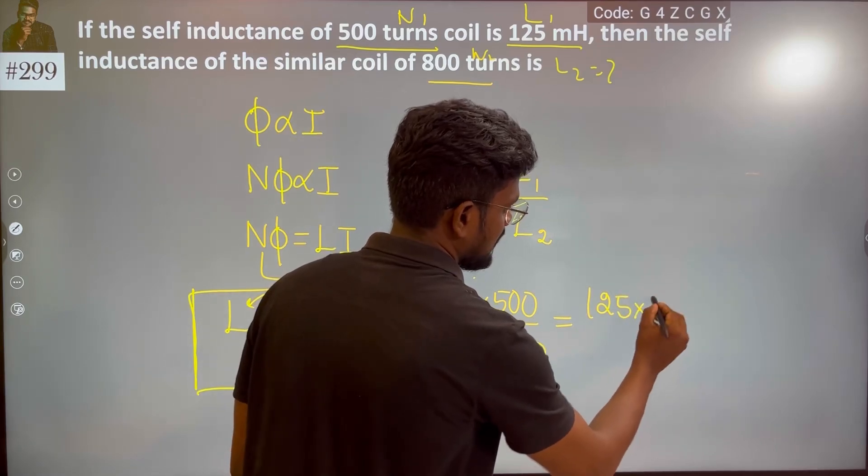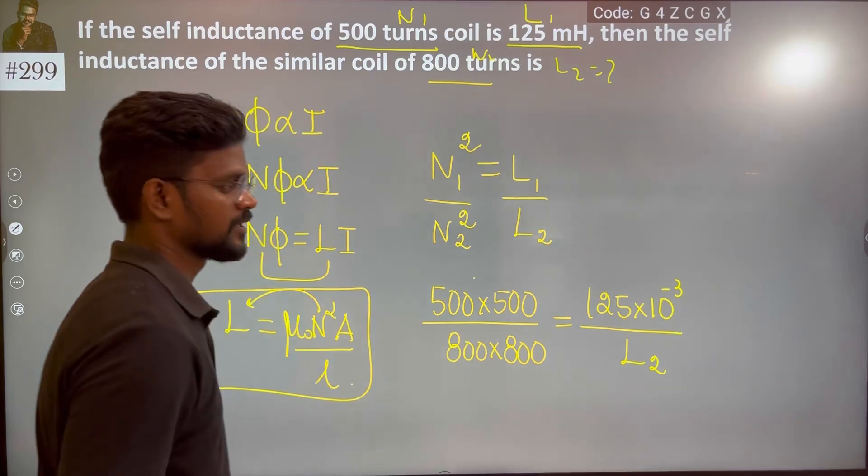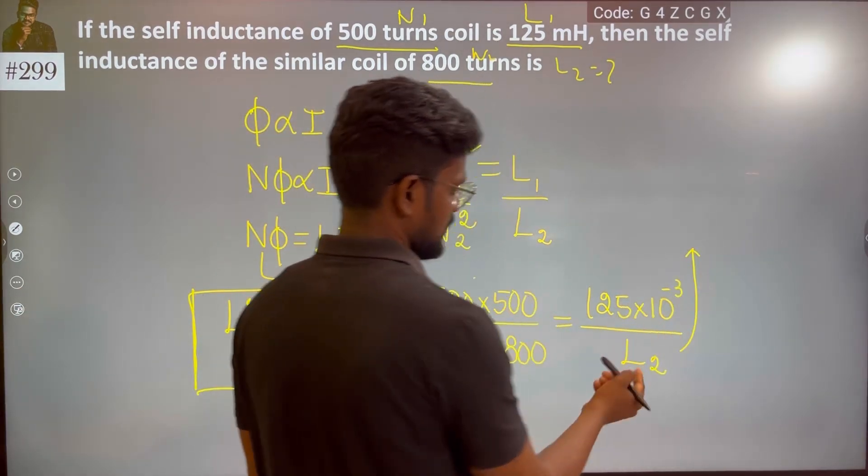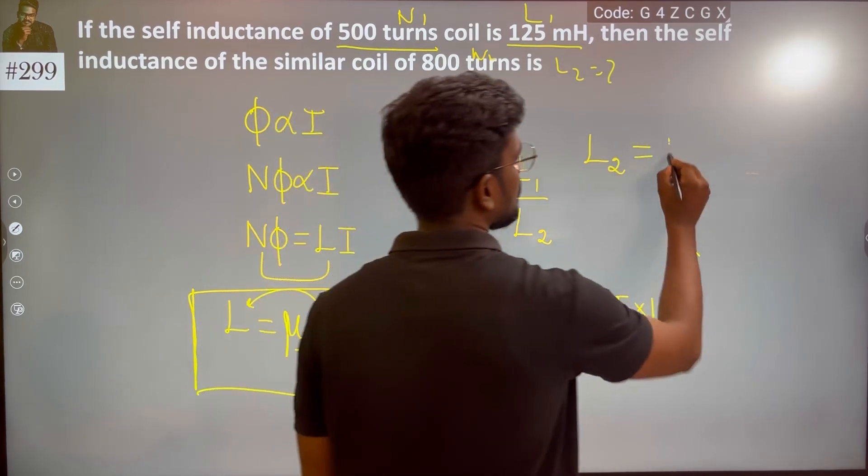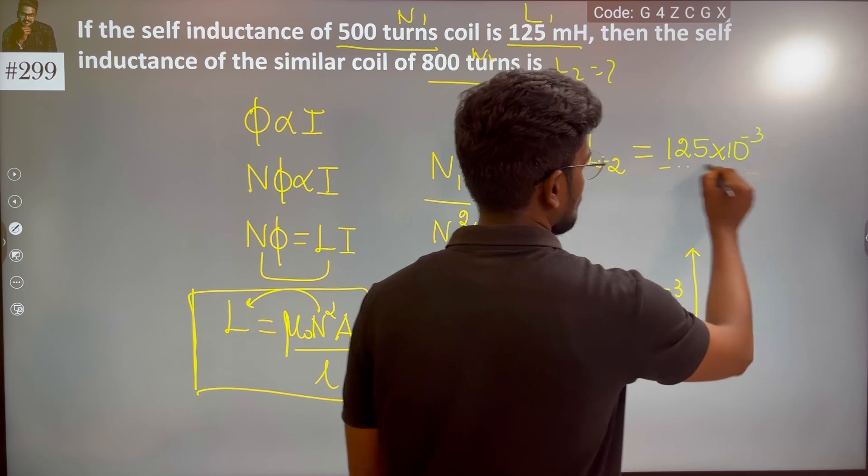So 125 millihenry, so minus 3, and then L2. L2 which is equal to 125 times 10 to the power minus 3 upon...